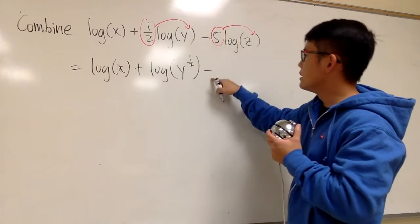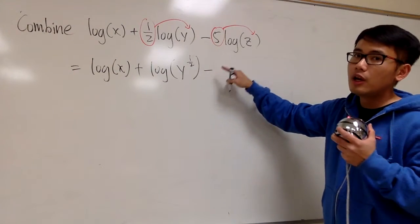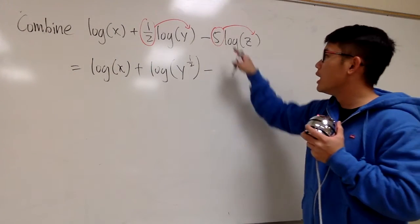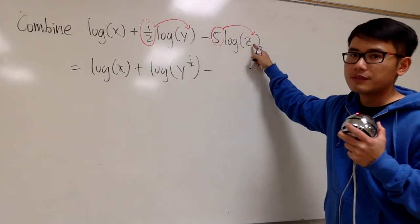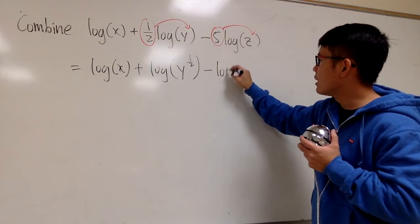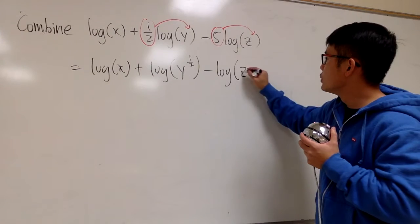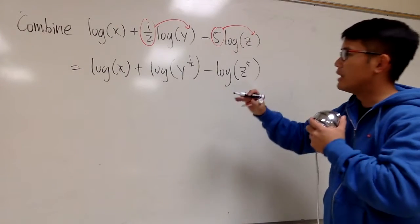And then minus. I maintain the minus. All I want to do right now is put a 5 for the exponent of z. So we will have log(z^5).